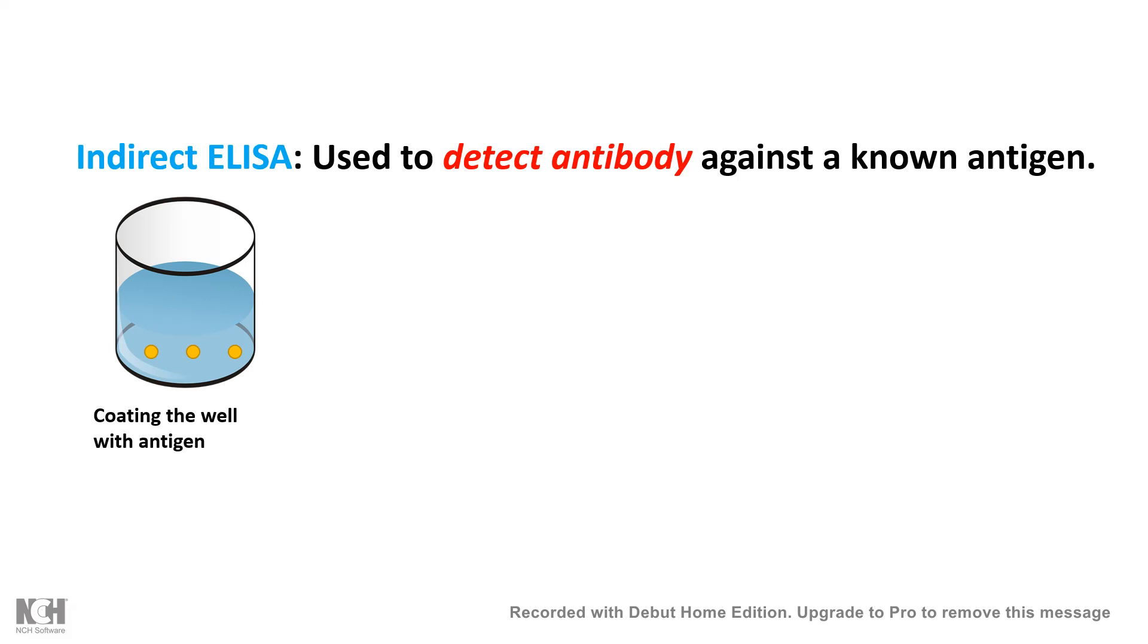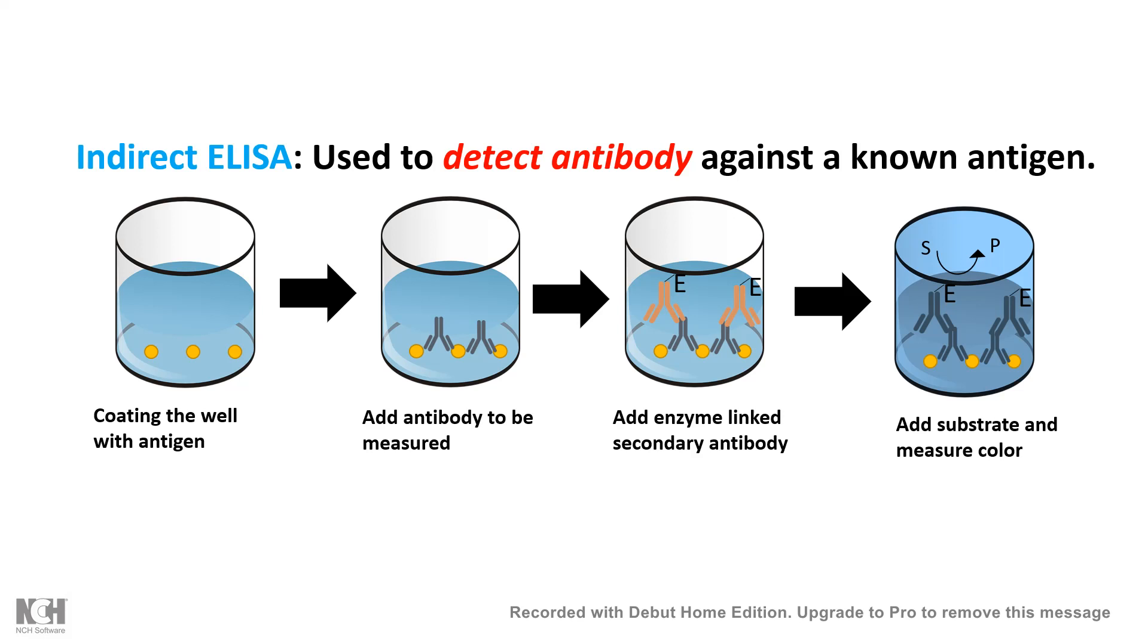So here you can see some known antigens are already coated in the well, and now you add antibody which needs to be measured, and in this case it would be patient serum or anything. Then you put the secondary antibodies with this enzyme link, and whenever you give a substrate, it would give a color which can be measured.